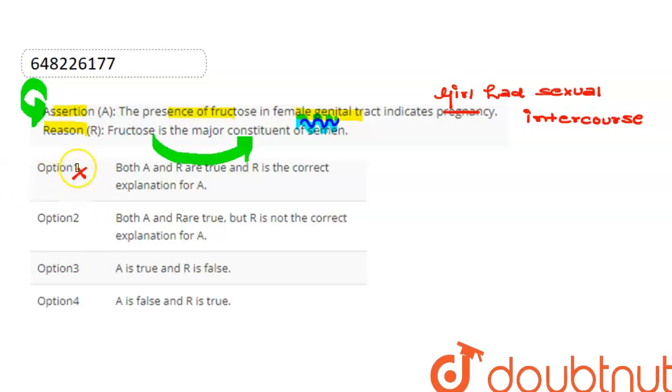Option 2 states: Both assertion and reason are true but reason is not the correct explanation of assertion. This option is wrong.